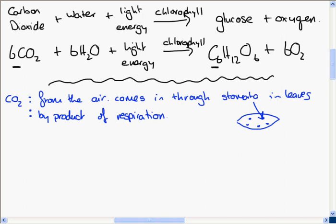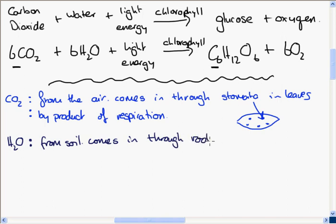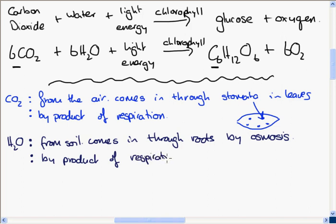The next thing the plant needs for photosynthesis is water, H₂O. The plant gets the water from the soil, and it comes in through the roots by a process called osmosis. There's another place the plant can get water, and that is also as a by-product of respiration — during respiration the plant produces water, holds on to it, and can then use it for photosynthesis.